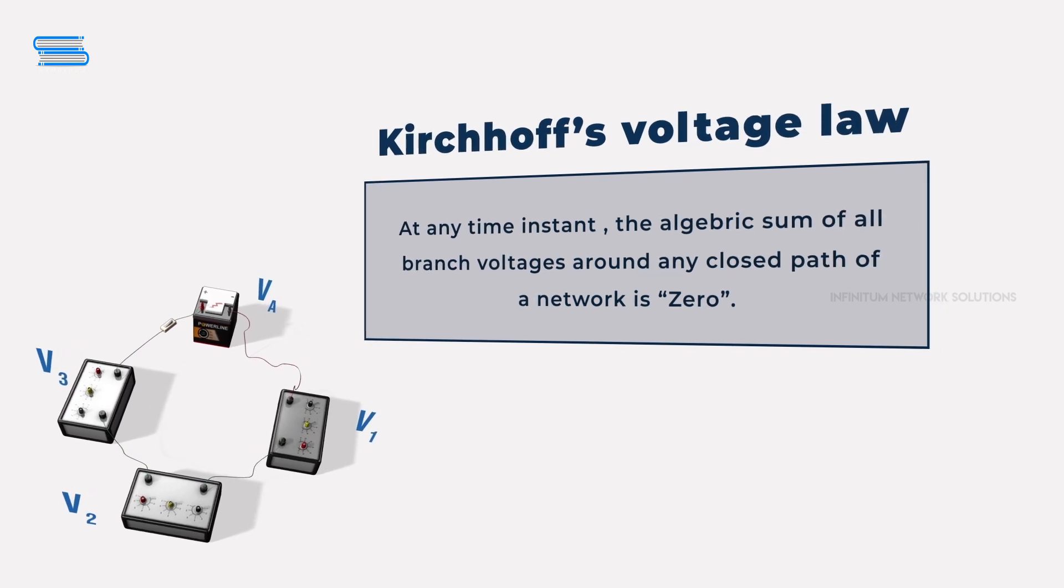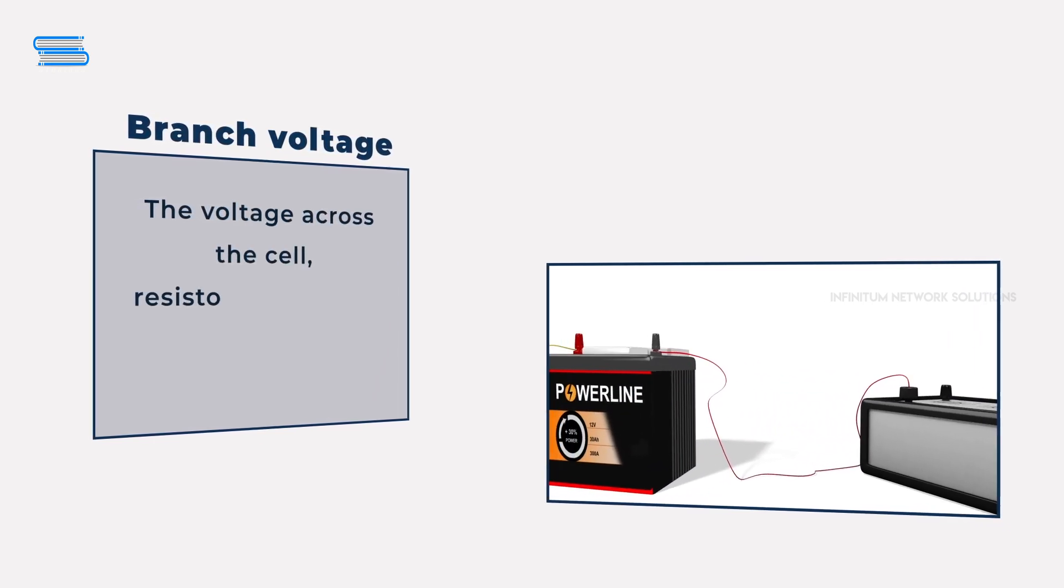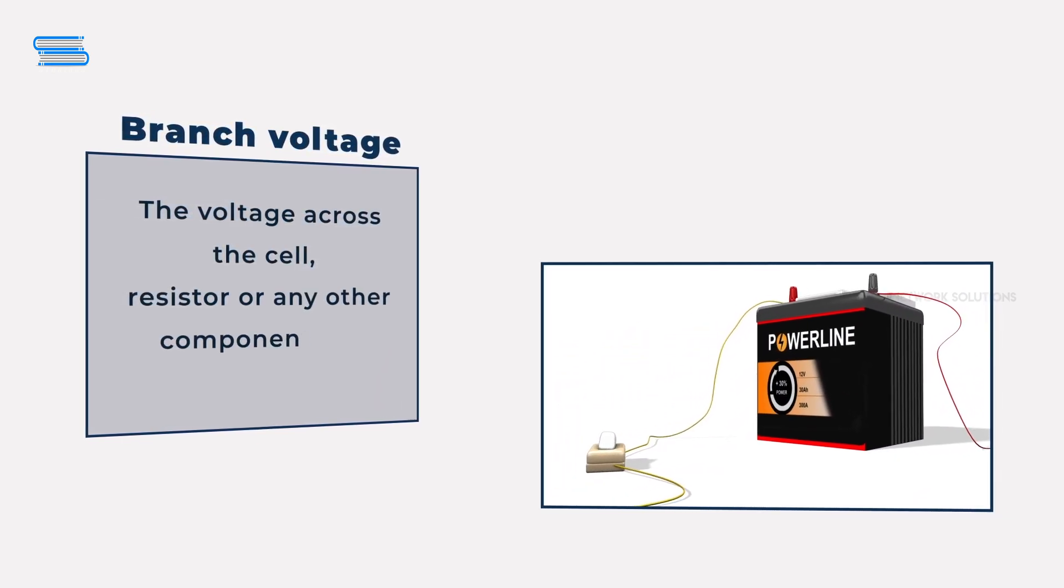Just to clarify the terminology of the law, a branch voltage is the voltage across a cell, resistor, or any other component in a network.